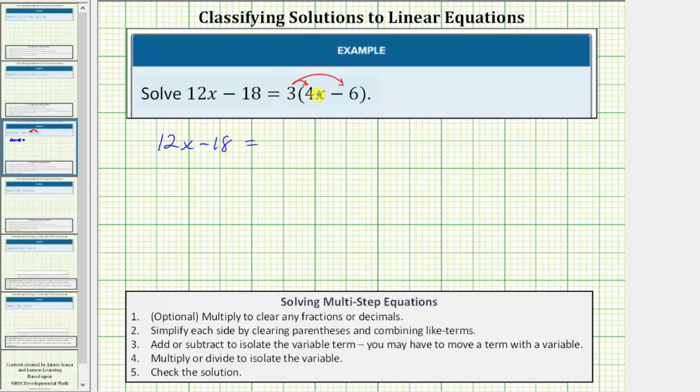Now on the right side, three times 4x is 12x. We have 12x minus three times six is equal to 18.